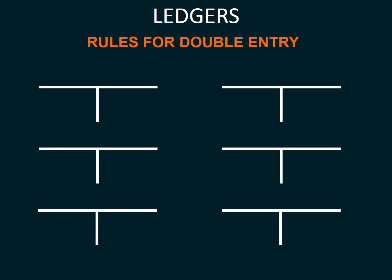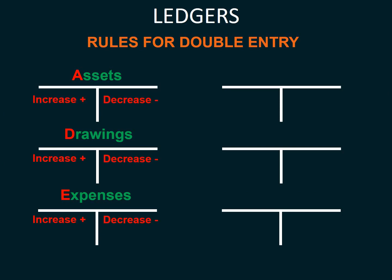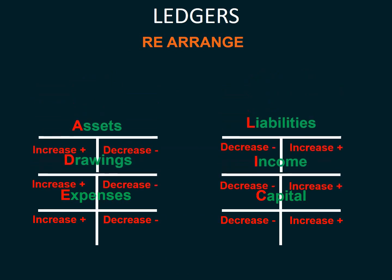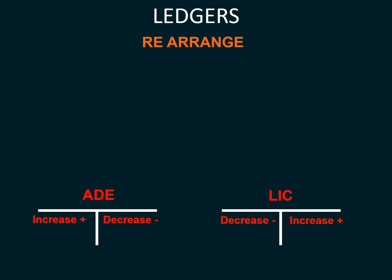The rules for double entry are as follows. For assets, drawings, and expenses — these increase on the debit side and decrease on the credit side. We can remember this as ADE: assets, drawings, and expenses increase on the debit side and decrease on the credit side.